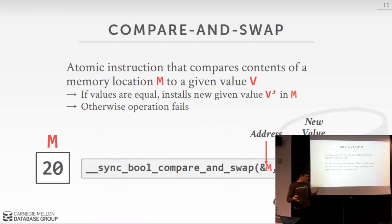Compare-and-swap is a single instruction that modern CPUs provide. It checks a memory location to see whether it matches an expected value, and if so, atomically installs a new value. For example, if I check whether the value is 20 and it is, I can flip it to 30 atomically. This works correctly even in a virtual machine, as the hypervisor allows raw CPU instruction execution.